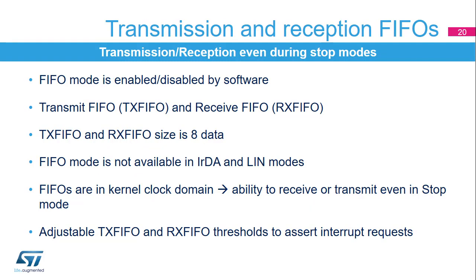The USART can operate in FIFO mode, which is enabled or disabled by software and is disabled by default. The USART comes with a transmit FIFO (TX-FIFO) and a receive FIFO (RX-FIFO), each being 8 data deep. When IRDA and LIN modes are used, FIFO mode is not supported. Provided that the TX-FIFO and RX-FIFO are clocked by the kernel clock, it is possible to transmit and receive data even in stop mode. It is possible to configure TX-FIFO and RX-FIFO thresholds, used mainly to avoid underrun or overrun issues while waking up from stop mode.